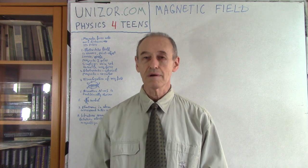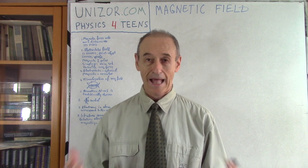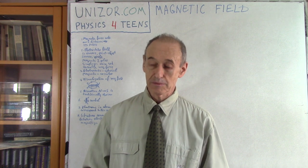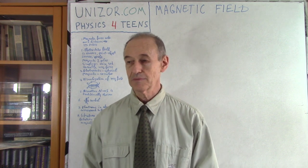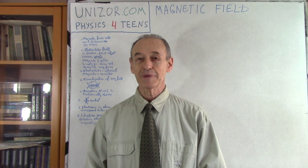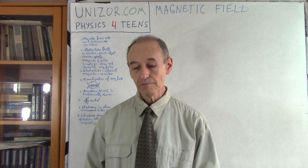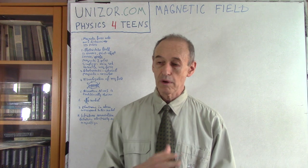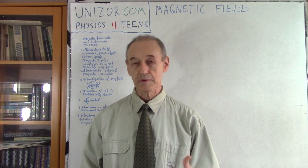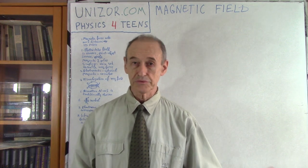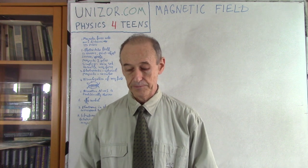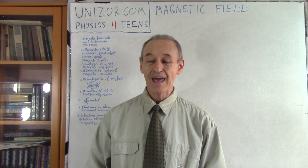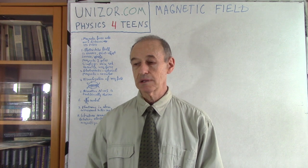We consider this field as a reality and we study it as much as we can. So there is such a thing as a magnetic field, and we have to study it. The fields we were studying before were gravitational fields and electrostatic fields — they are easier, and here is why.